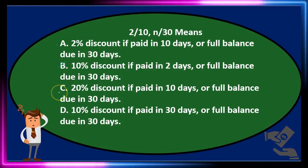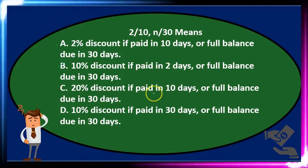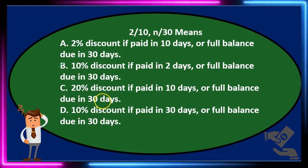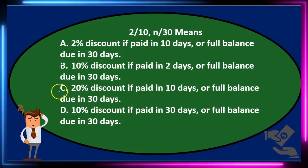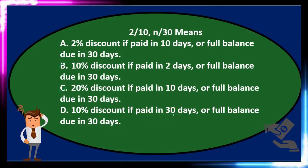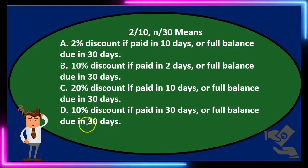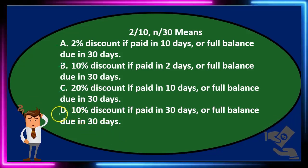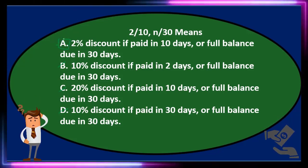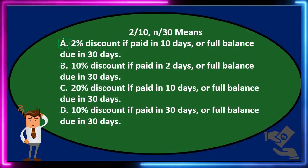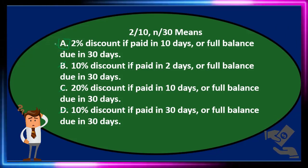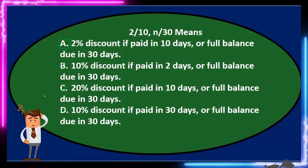C says 20% discount if paid in 10 days or full balance due in 30 days — I don't see where the 20% came from, so that doesn't seem right. D says 10% discount if paid in 30 days or full balance due in 30 days — that 10% is backwards again. So the answer is A. The question: 2/10, N/30 means A — 2% discount if paid in 10 days or full balance due in 30 days.